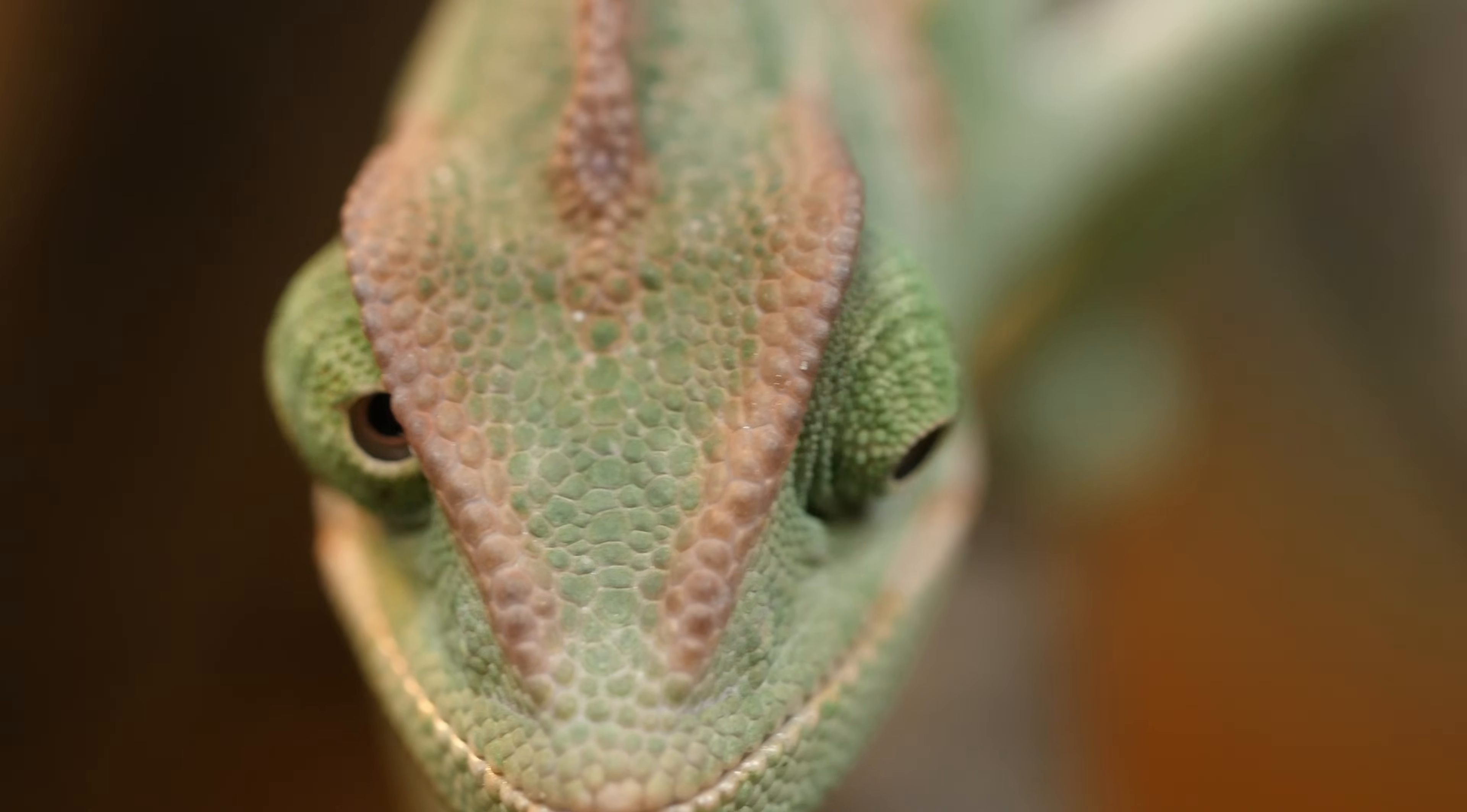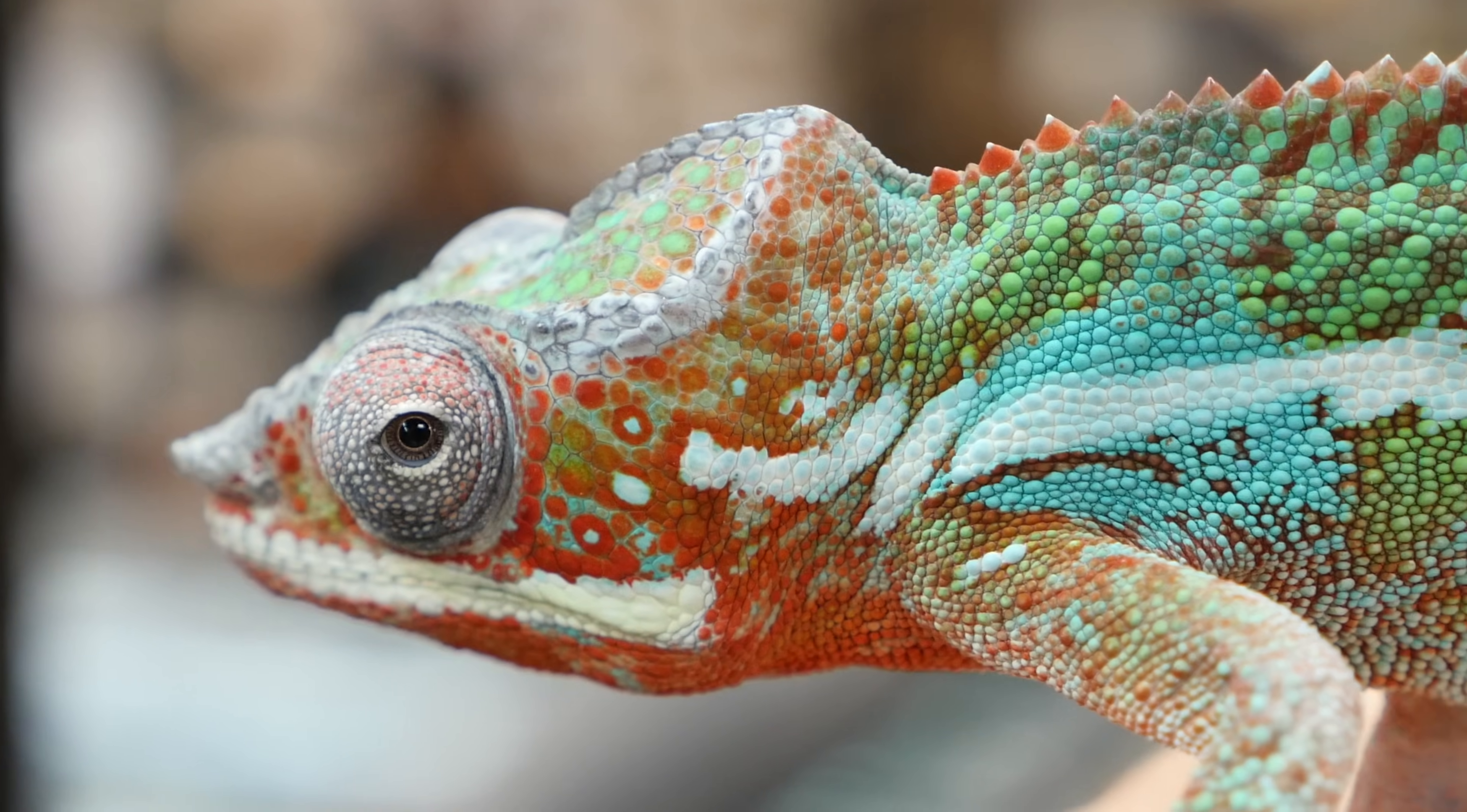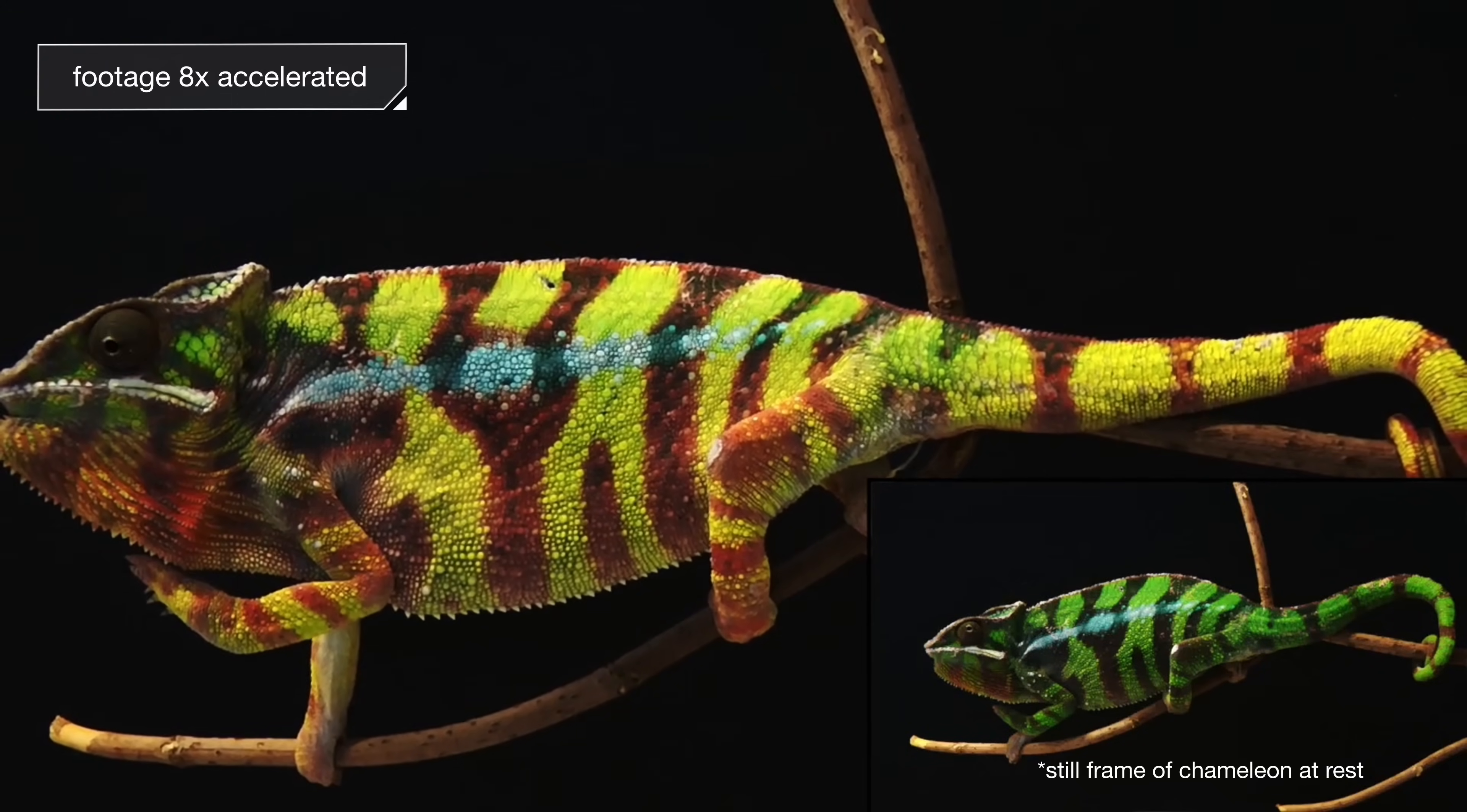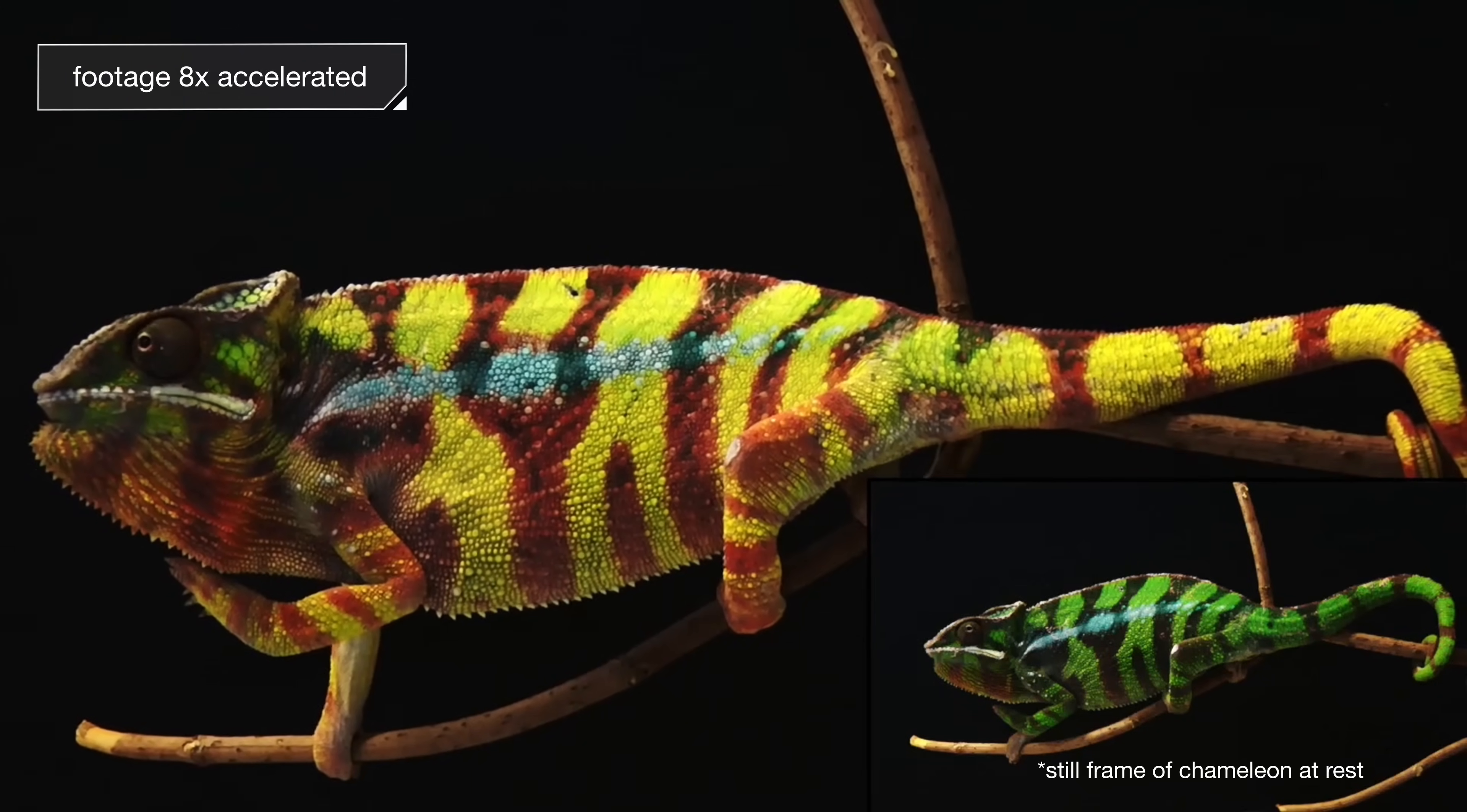But when they feel threatened or annoyed or just want to show a little swagger, that is when their color changes. They transform into living mood rings. Chameleons change color to make a statement. The faster their skin changes colors, the more excited they are.